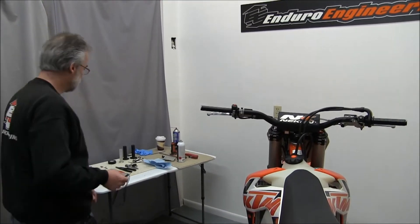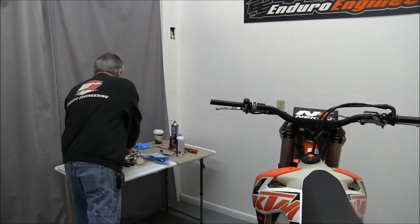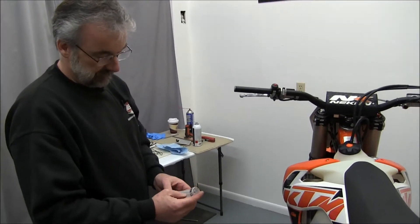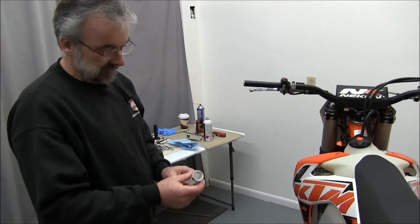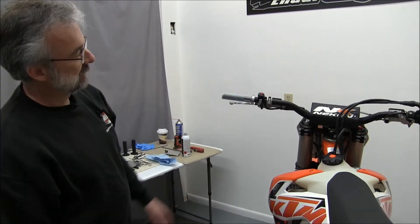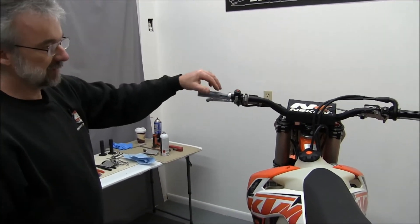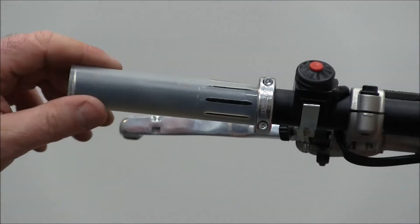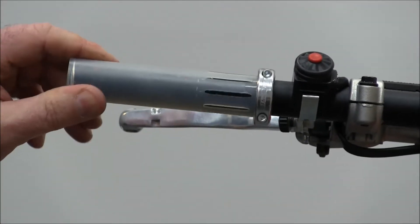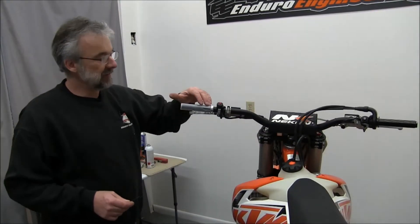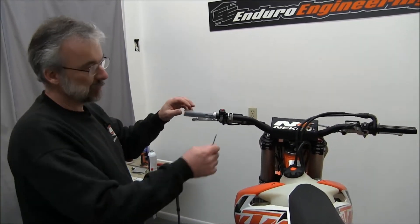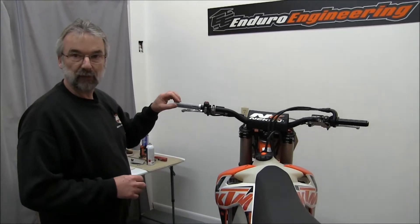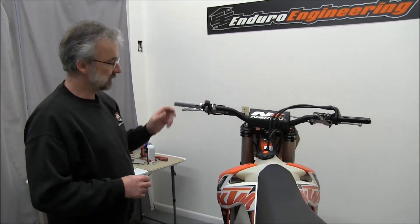What we always do here at Enduro Engineering is we take a Boyson flex grip which uses a plastic tube much like the throttle tube. Once you put this flex grip on this handlebar, you've got a plastic insulation set up the same way you do on the throttle side. So the left grip will stay much warmer in this case.